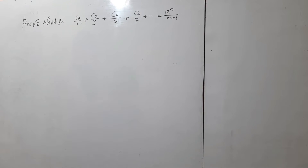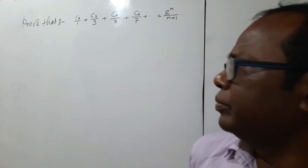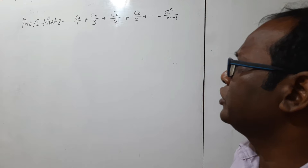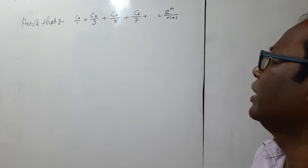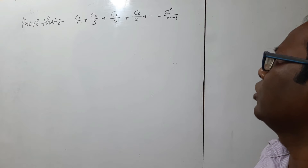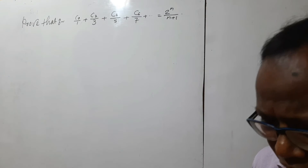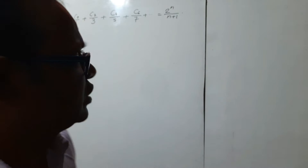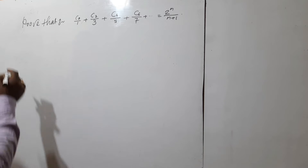Welcome to my channel. There is a problem involving the binomial theorem: C1 over C2, C3 over C4, C5 over C6, C7, and so on, up to 2 to the power n over n plus 1. I am using the technique of integration to get the answer perfectly.